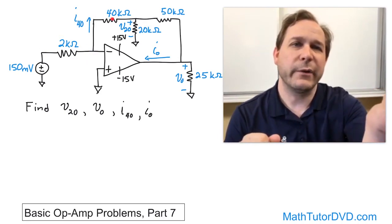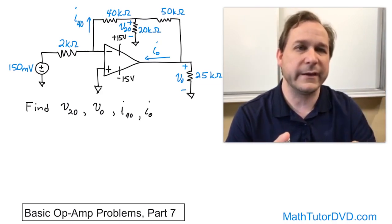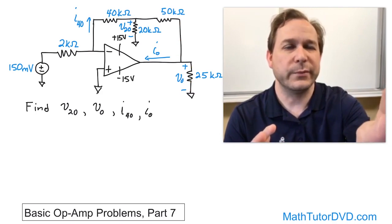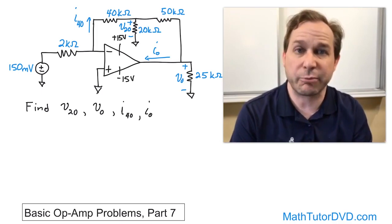Because of that, we know the current going up there we can find, but then it's going to split, and that causes some issues because it's not going to be very easy for us to do a voltage loop because we're not going to immediately know the current flowing through this resistor. That's essentially the problem.